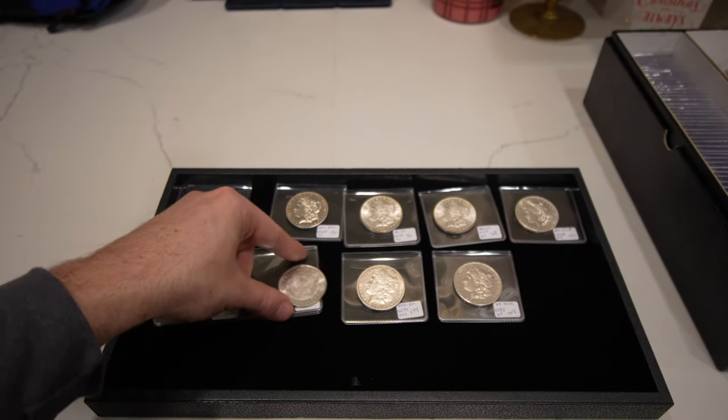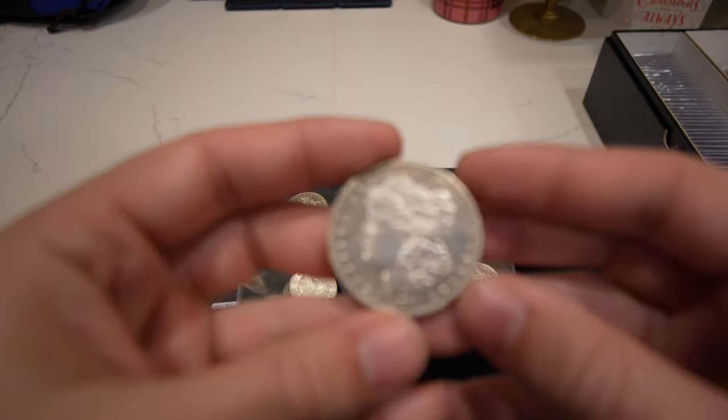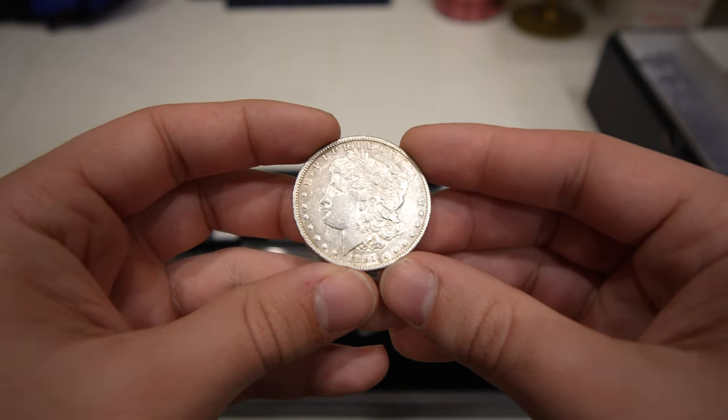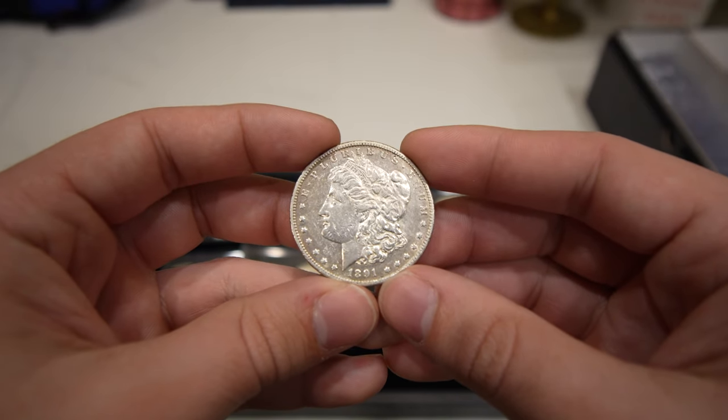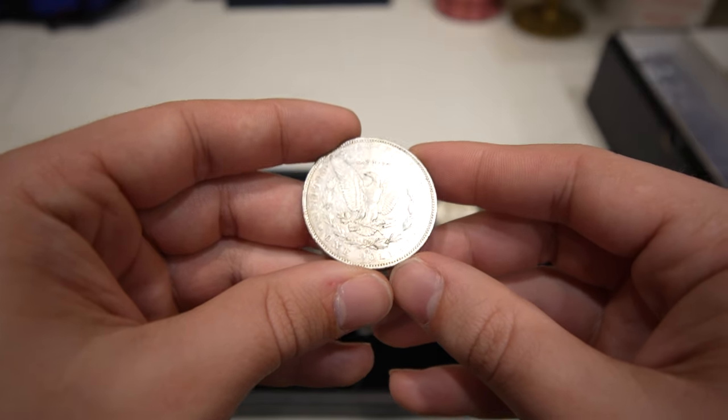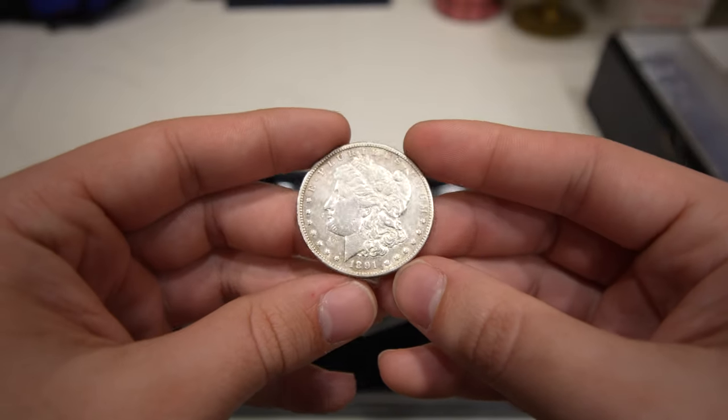Then we have an 1891 CC. So, this coin also has been harshly cleaned. You could tell by the surfaces of the coin. There's haloing around the stars. There's damage also. It looks like they might have tooled it a little bit near the face. And, yeah, just a nice, phenomenal key date. But, it's rather affordable, since it's been cleaned, and that's okay.